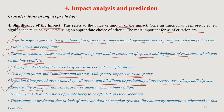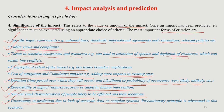Reversibility of impact is very important — whether there is a chance of natural recovery from the damage caused, or whether human intervention for restoration or preservation work is possible. The number of people likely to be affected and their locations is another important consideration. Uncertainty in prediction due to lack of accurate data or complex systems — in this case the precautionary principle is often advocated as a criterion selection technique for impact analysis and prediction.